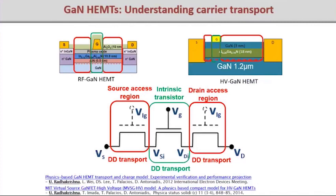In the MVSG approach we follow a sub-circuit topology: we model each region of the device as a transistor. We have the gated transistor and the access regions modeled as implicitly gated transistors — no actual gate, but an implicit gate controlling how 2DEG carriers move under large VDS, impacting non-linear behavior. Each region is characterized by the same physics of carrier transport: drift-diffusion for longer gate-length high-voltage devices, and quasi-ballistic velocity-saturated transport for RF devices. The core model equations for each sub-circuit transistor are the same, but parameters like region length differ.